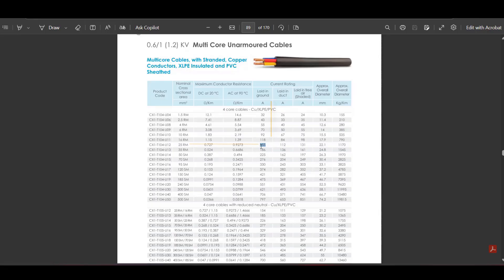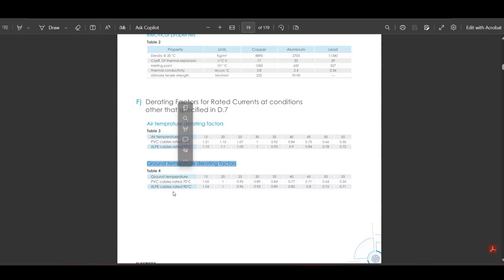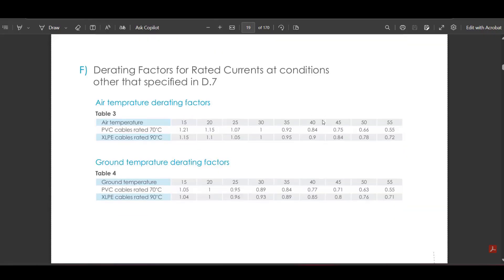We must consider the derating factors. These factors depend on the soil temperature, the burial depth, and the installation method. Let's get the derating factors one by one from the catalog tables. First, derating factor 1, which is ground temperature factor. For XLPE cables at 40 degrees Celsius soil temperature, the factor is 0.85.